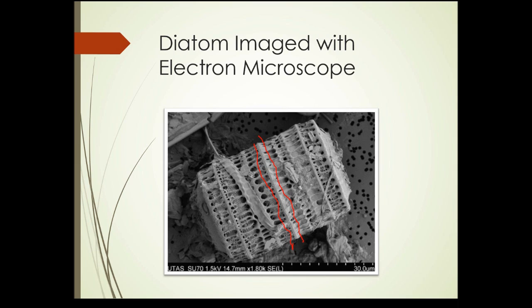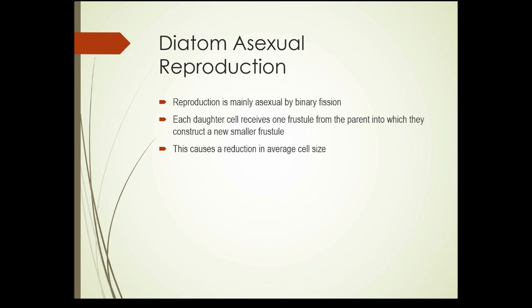Diatoms can reproduce asexually or sexually. Keep in mind this is a silicon-based cell wall — once it's made it can't grow; it's stuck at this size. One half fits over the other half a little bit. When diatoms reproduce asexually, they reproduce by binary fission — a cell splits into two, and you end up with two new cells. Each daughter cell receives one half of the frustule from the parent and then constructs a new, smaller frustule that fits into the half they received.